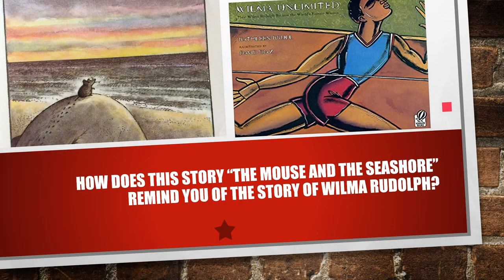And now this is the time where you put together the two stories and make a text-to-text connection. How does the story of the mouse at the seashore remind you of the story of Wilma Rudolph? What are the connections you make between those texts?